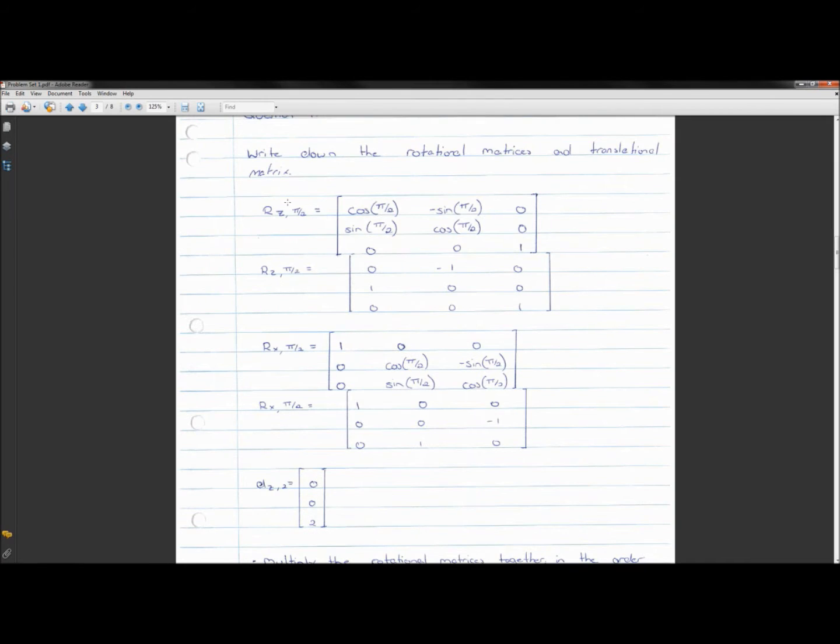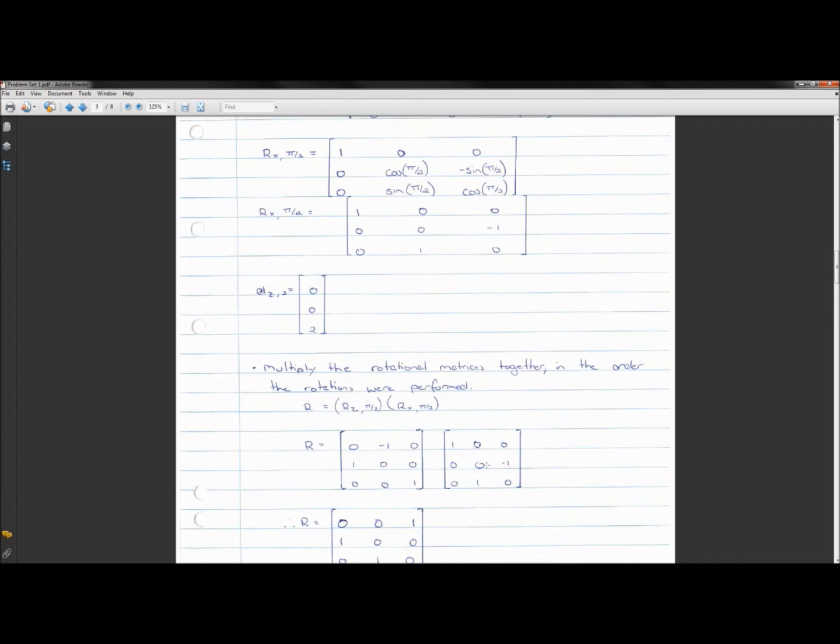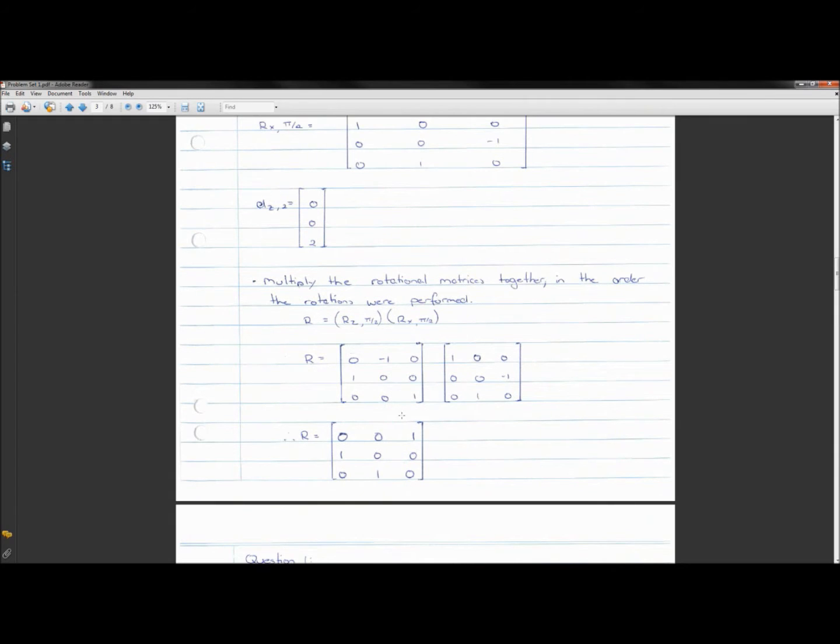So in this case, we first performed a 90 degree rotation about the RZ, followed by a 90 degree rotation about the X axis. So we multiply in that order. We multiply the RZ pi on 2 rotation by the RX pi on 2 rotation. So that matrix by that matrix, to give us this.